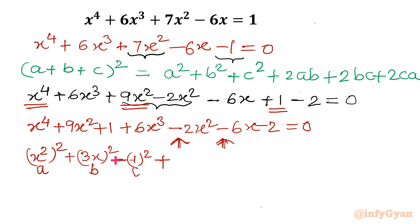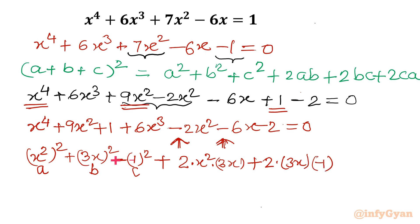Let's verify: 2ab = 2 × x² × 3x = 6x³ ✓. Then 2bc = 2 × 3x × (-1) = -6x ✓. And 2ca = 2 × (-1) × x² = -2x² ✓. So the expression fits the whole square form, and minus 2 = 0.